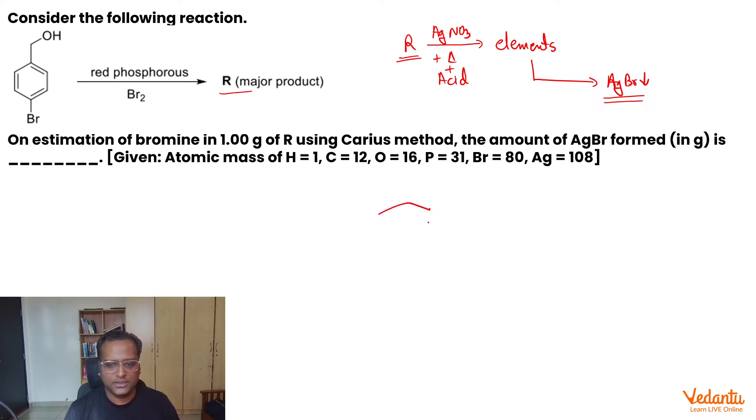Simple enough, isn't it? So what is the reaction taking place? What is R? Red phosphorus plus bromine is a brominating agent. It will convert allylic alcohol system into halide system or bromo system. So this is your compound R.